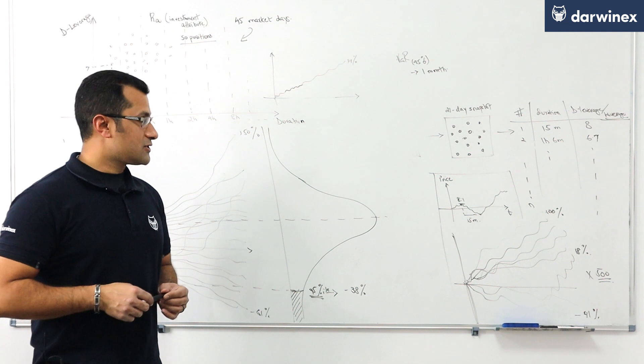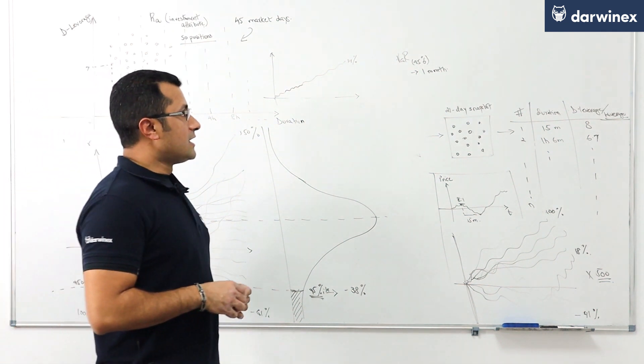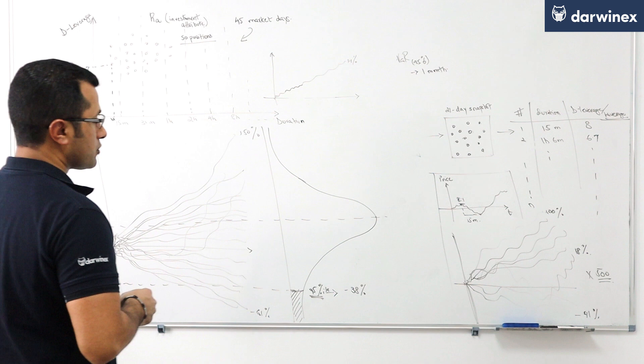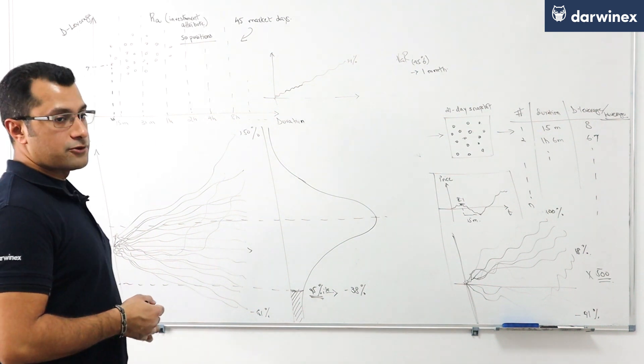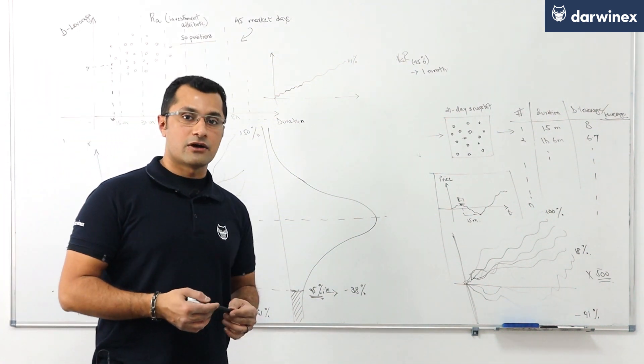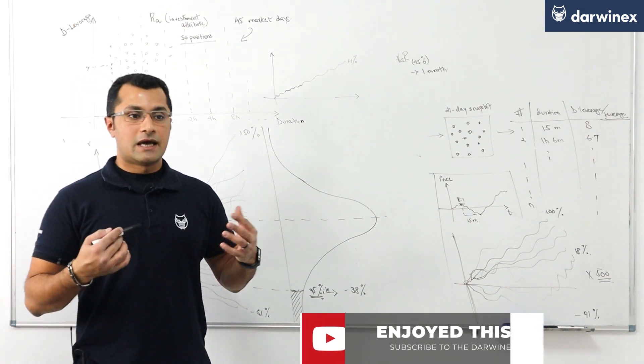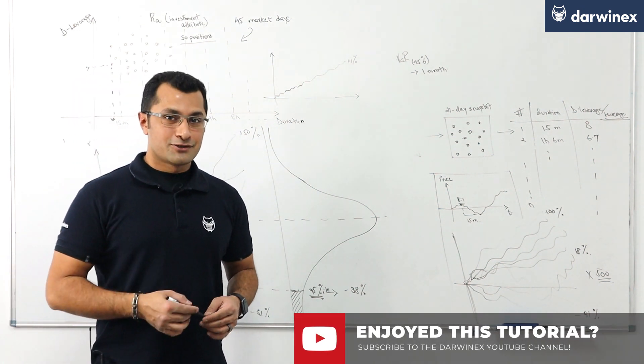At DarwinX. So hopefully that has been explanatory, and in future tutorials we're going to go ahead and talk about the relationship between the volatility of past returns and the Value at Risk of a trading strategy. See you in the next tutorial.